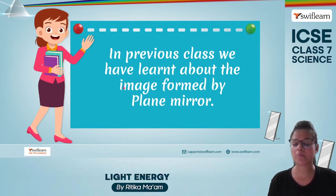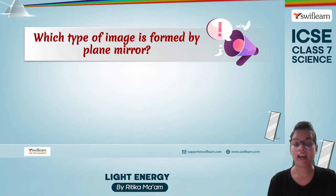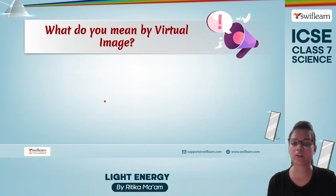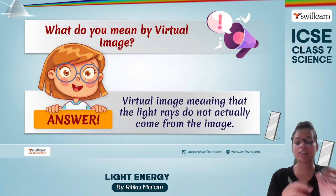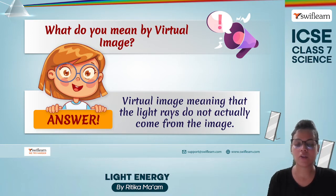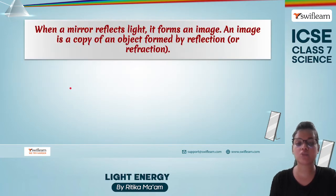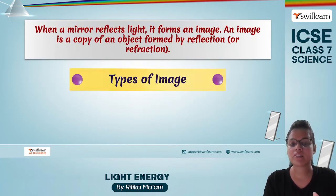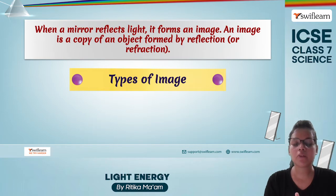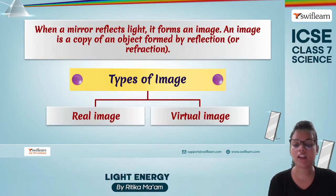In the previous class we learned about the type of image formed by a plane mirror, which is known as a virtual image. A plane mirror forms a virtual image, meaning the light rays do not actually meet but they appear to come from the image. When any mirror reflects light, an image is formed. An image is a kind of replica or copy of the object, formed by reflection.